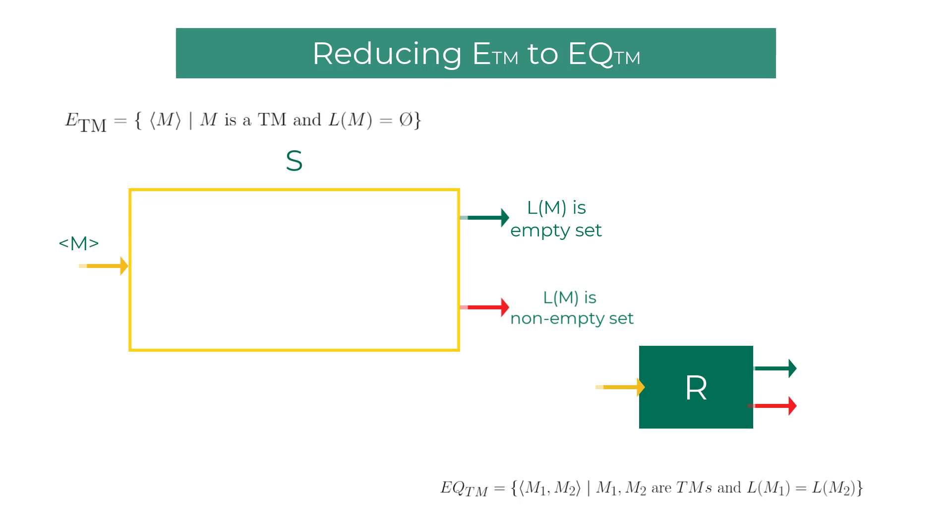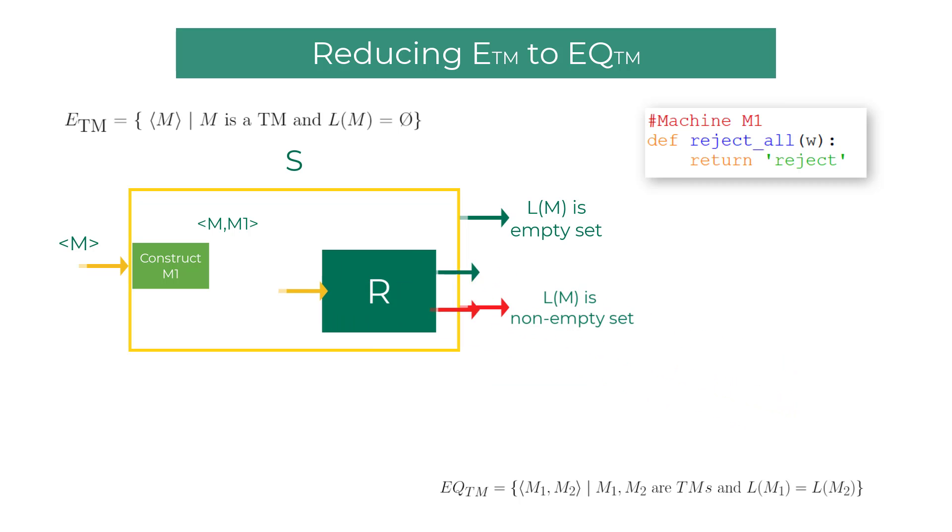We can construct a Turing machine M1 that rejects every input string, basically the reject all Turing machine. We will use the machine description of this reject all Turing machine and the machine description M together and pass it to the decider R.